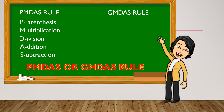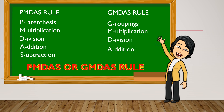In GEMDAS rule, like PEMDAS, G stands for groupings, E exponents, M multiplication, D division, A addition, and S subtraction. In both rules, we must follow the order of operations.